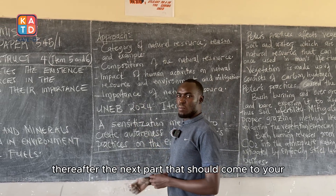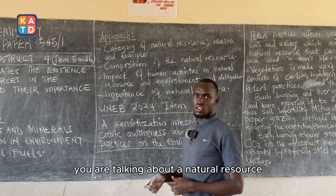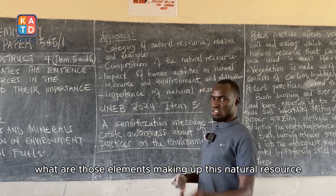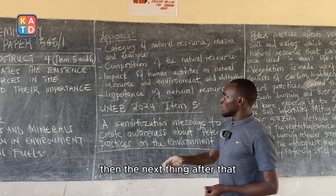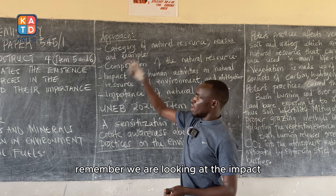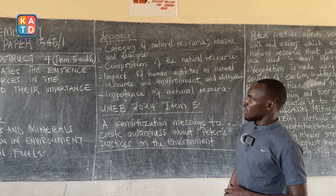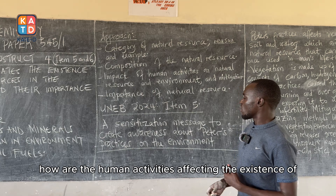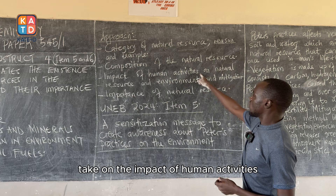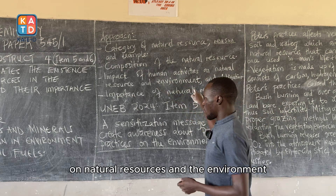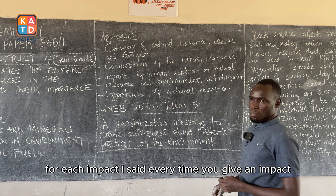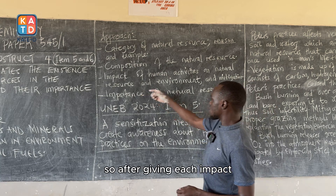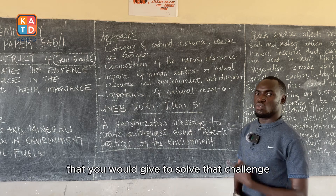The next part that should come to your mind is composition — what are those elements or compounds making up that natural resource? After composition, look at the impacts: how is man impacting the existence of natural resources? How are human activities affecting natural resources and the environment? For each impact you give, always escort it with a mitigation — what is the solution you would give to solve that challenge?